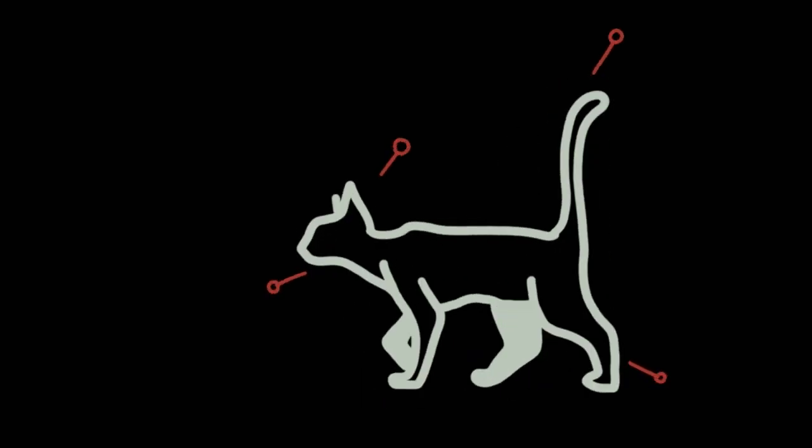These neural networks learn to perform tasks by using examples, usually without being programmed with task-specific rules. Instead, they automatically generate identifying characteristics from training data that they process.